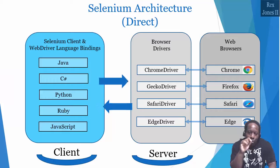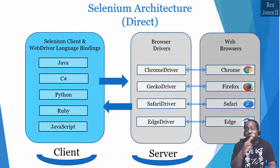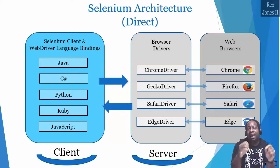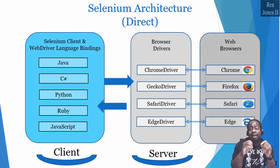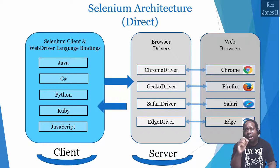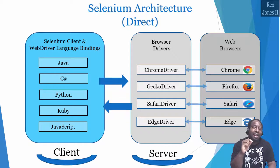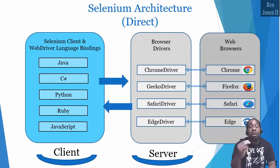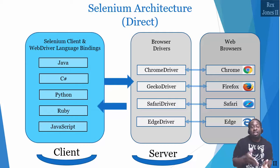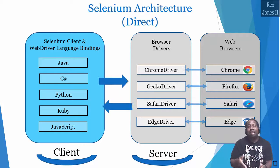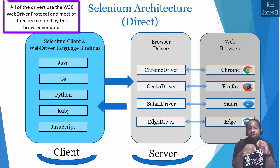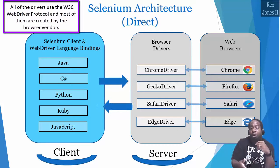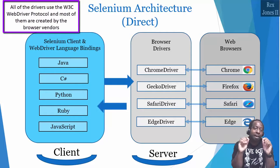Back to our diagram. We see the second component is Browser Drivers and it has two functions. The first function is to receive a request from Selenium Client and WebDriver Language Bindings, then pass that request to the browser. A driver is also known as a proxy, responsible for controlling the browser. The second function is to return a response from the browser back to the Selenium Client and WebDriver Language Bindings. All of the drivers use W3C WebDriver protocol and most of them are created by the browser vendors.